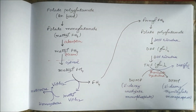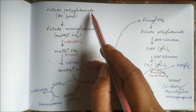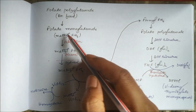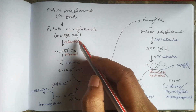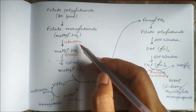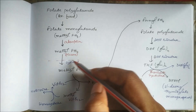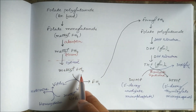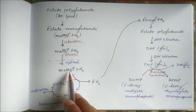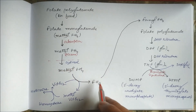Regarding the role of folate in DNA synthesis: in food we have folate polyglutamate, which is converted to folate monoglutamate, that is methyl tetrahydrofolate, which is absorbed and enters the blood as methyl tetrahydrofolate. It then enters the cytosol, where it releases its methyl group to become tetrahydrofolate.